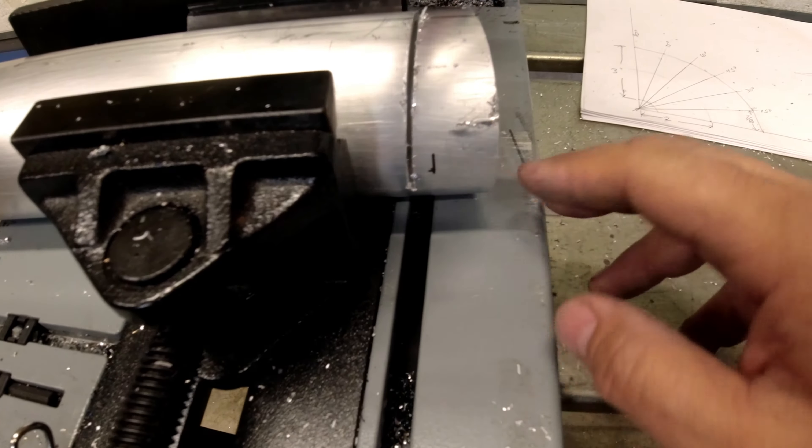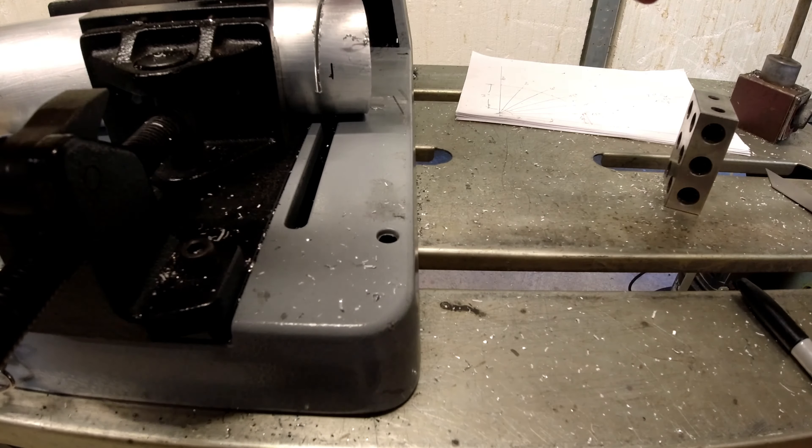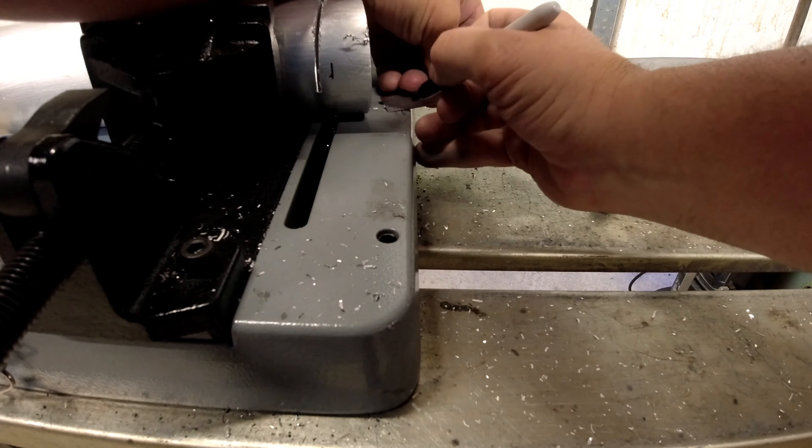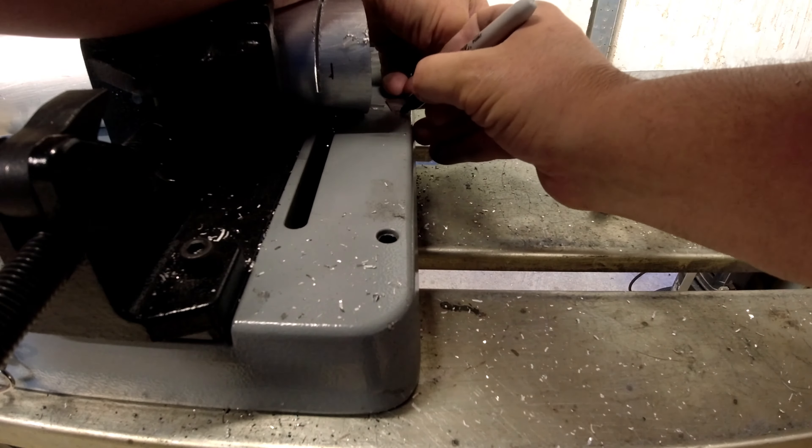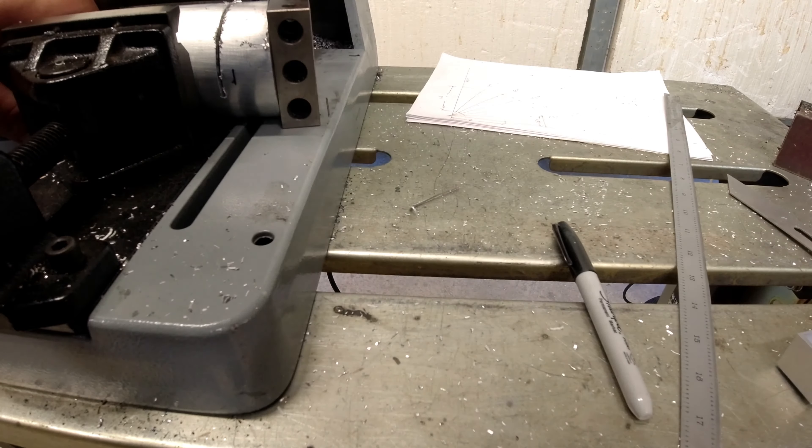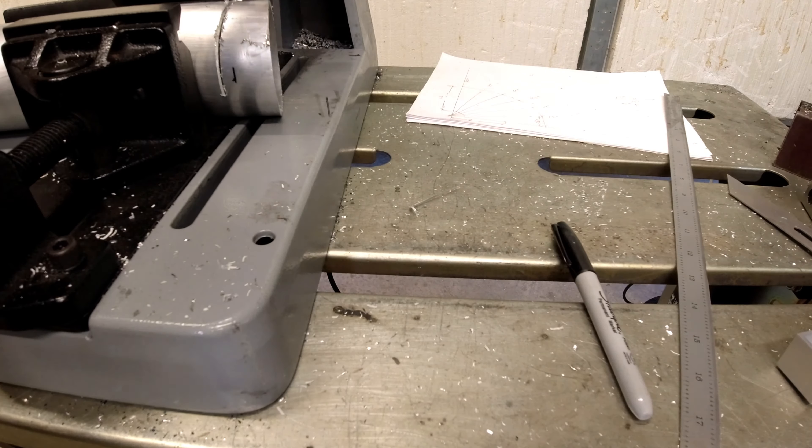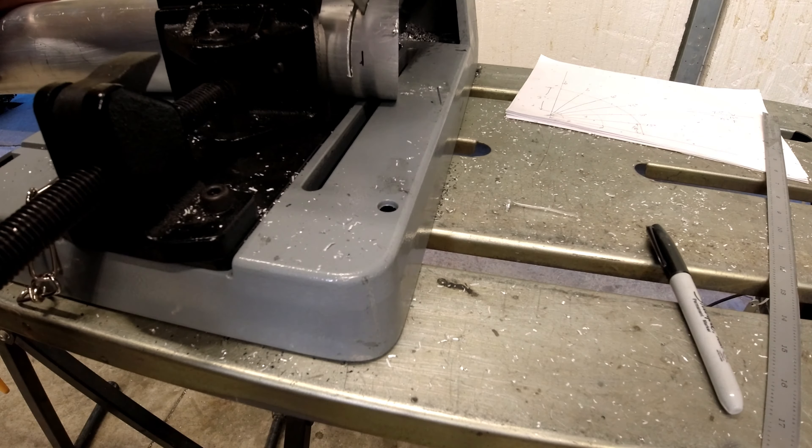Now you can see we're off of our line right there. So what we're doing is we're going to measure this, and I'm going to offset this line in and we're going to make a new cut before we cut it all the way through. So it looks like it's about 300 thousandths. So I'm going to come in here, I'm going to make a line 300 thousandths away, tighten down, and then let's see how close we are to that line now.